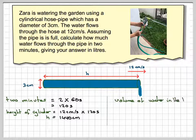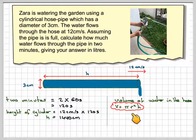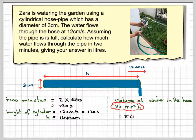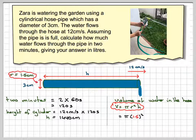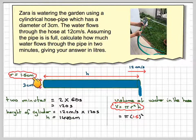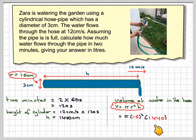So, the volume of water in the hose, and it's a cylinder, so it will be v equals pi r squared h. So, it's going to be pi times 1.5. Now, it's 1.5 because with the question we're given the diameter, and we need the radius, times 1440.